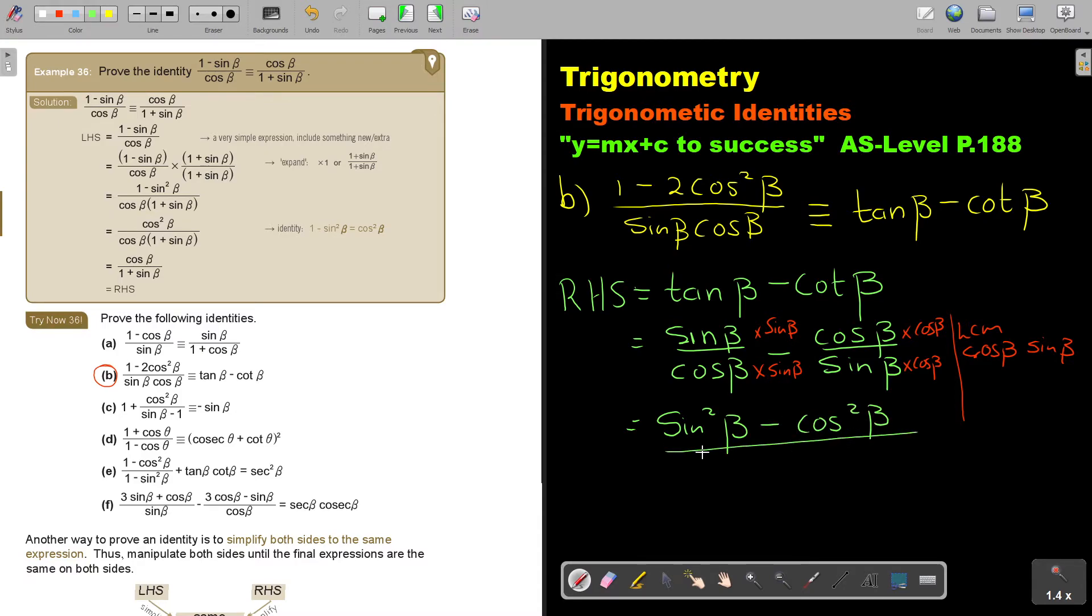So I'm going to end up with sin squared beta minus cos squared beta. And that's going to be over the LCM, which is cos beta sin beta. So I'm ending up with this.